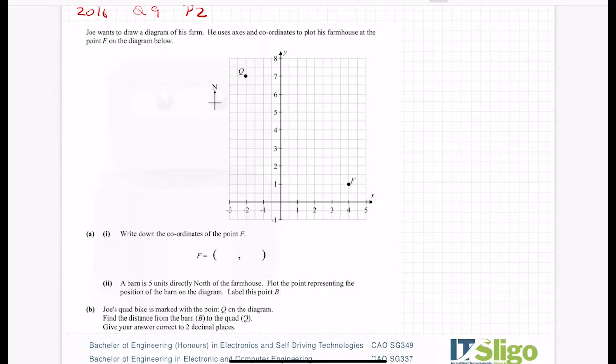Joe wants to draw a diagram of his farm. He uses axes and coordinates to plot his farmhouse at the point F on the diagram below. He uses to plot the farmhouse so F for farmhouse. Write down the coordinates of the point F. Always when you're writing down coordinates X before Y in the alphabet, X before Y when you're plotting. So this is at the number 4 and up to 1. So the coordinates there are 4 comma 1.